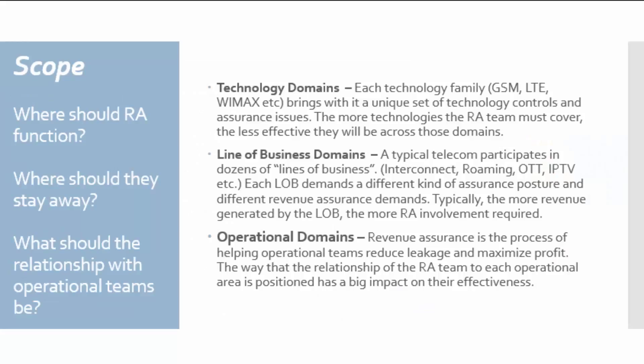The most important issue when scoping and determining the positioning of your revenue assurance department is to define the scope. There are three scope areas to consider. First, which technologies do you want them to work with? Each technology family — for example, GSM, LTE, WiMAX, or Fiber — brings an entire set of controls issues, and the team has to learn many technology-specific things to be effective. The more technology domains you put on the revenue assurance team, the less they'll be able to do a good job in any one particular area.